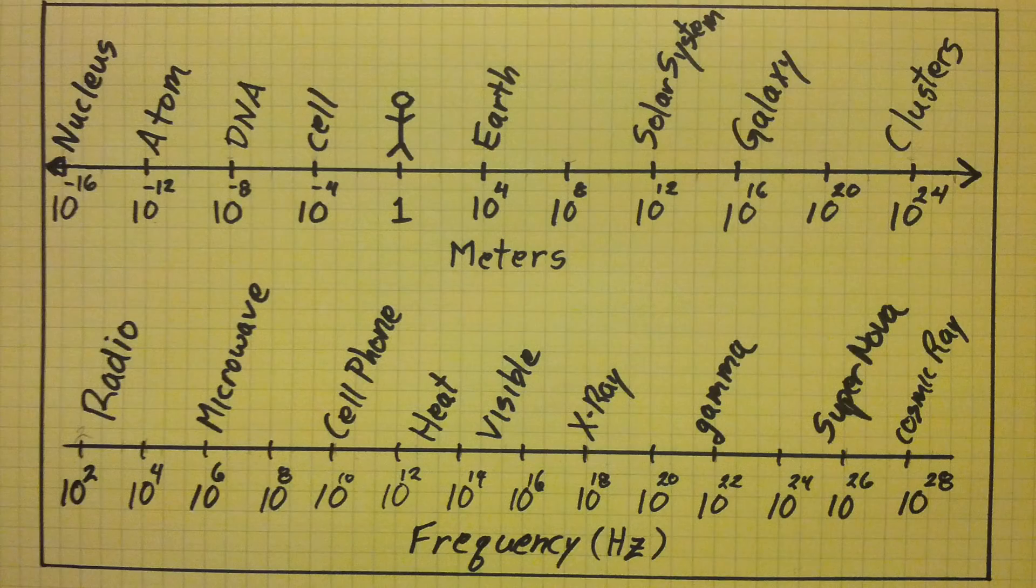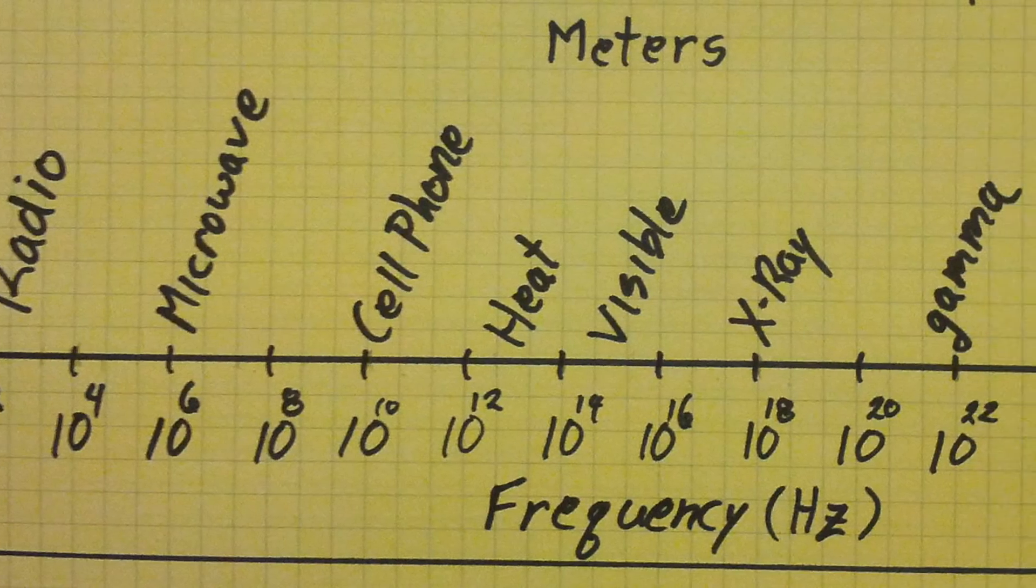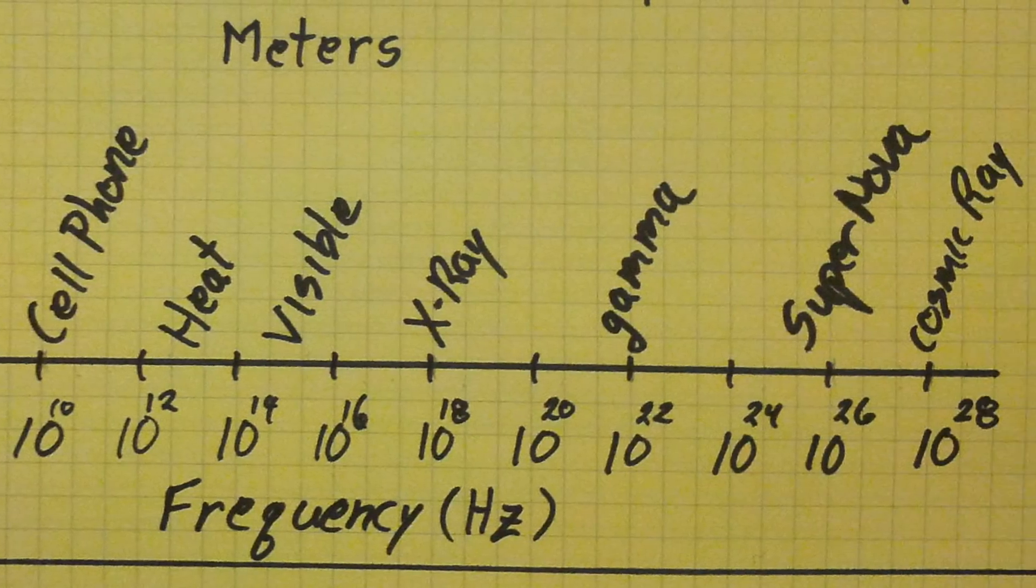And on the bottom is another line, this time with frequencies. Very low frequencies on the left, very slow oscillations. And then moving up to the right, all the way to the highest, fastest frequencies that we know of, the cosmic rays.